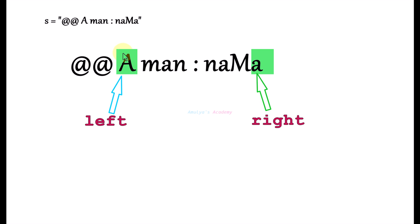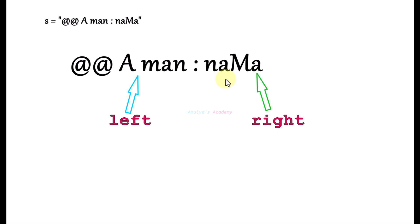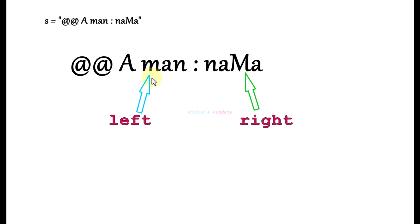After skipping non-alphanumeric characters, compare the characters at the left and right pointers, converting both to lowercase to ensure case-insensitive comparison. If the characters do not match, return false. If they match, it means this part of the string is still a potential palindrome. Here 'A' and 'A' match after converting to lowercase, so increment the left pointer by 1 and decrement the right pointer by 1, then continue.